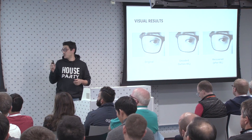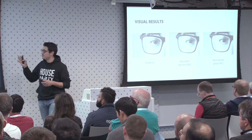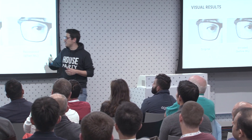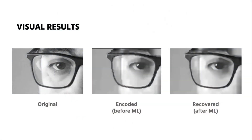Just to give you an idea of the type of improvement it makes to the image: this is the original image, this is the encoded image with artifacts — blocking — and this is the image after passing it through our machine learning model. You can see especially around the border of the glasses that the quality looks much better.